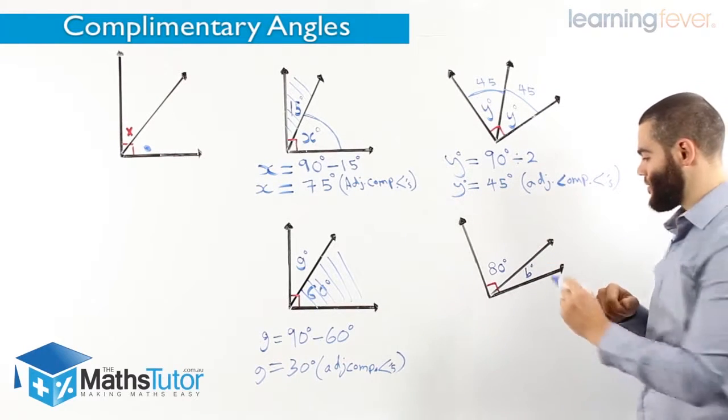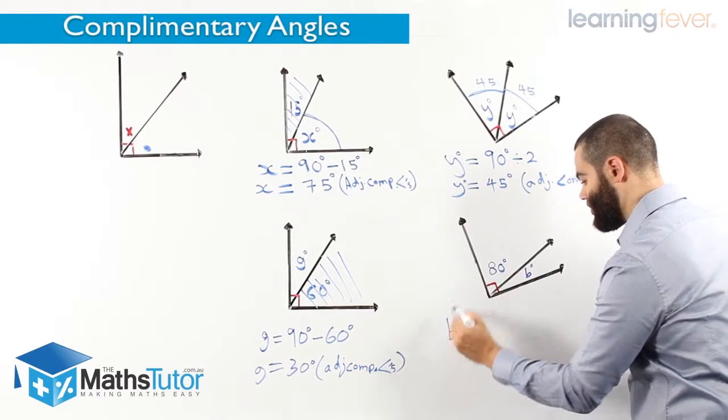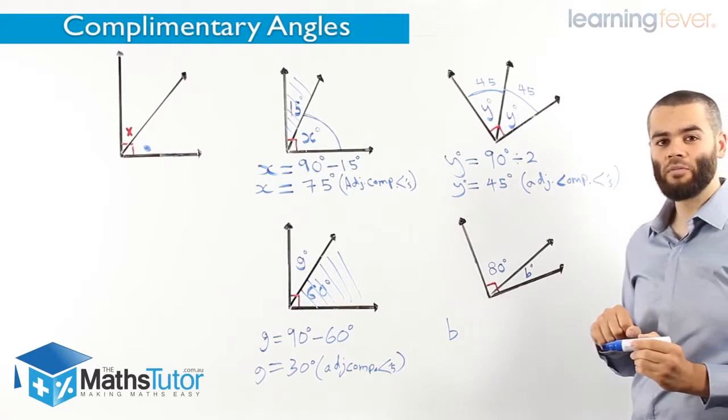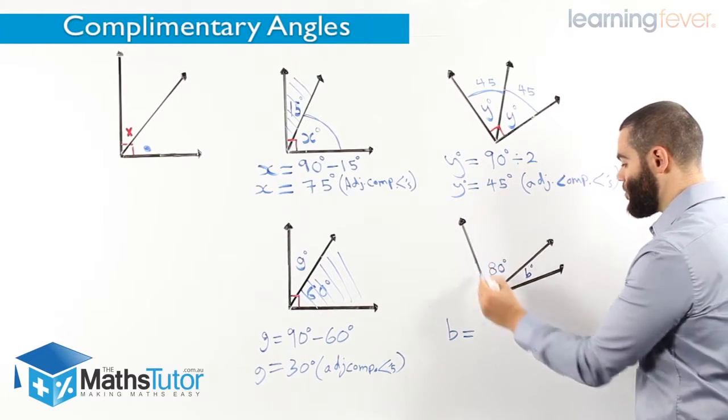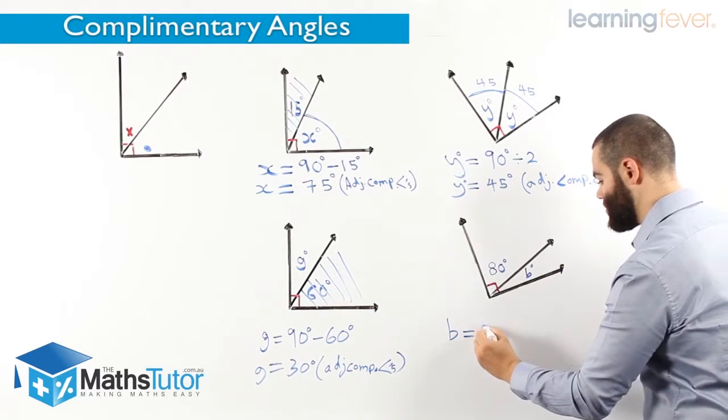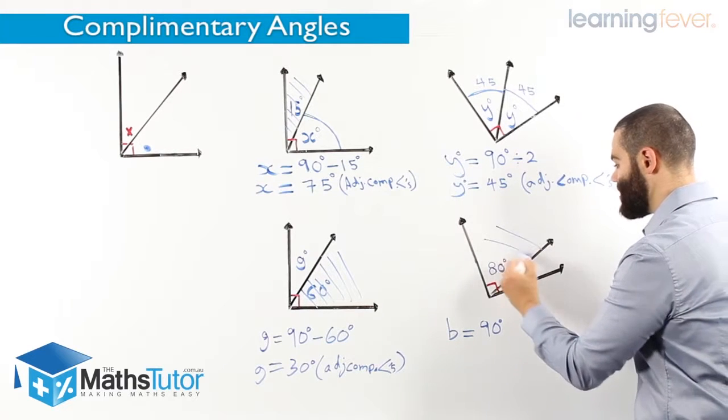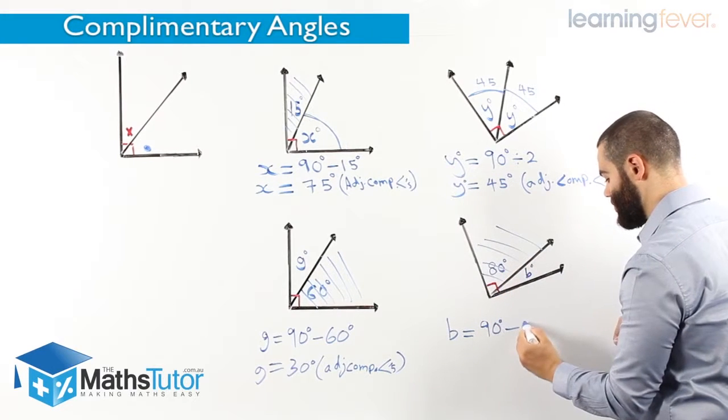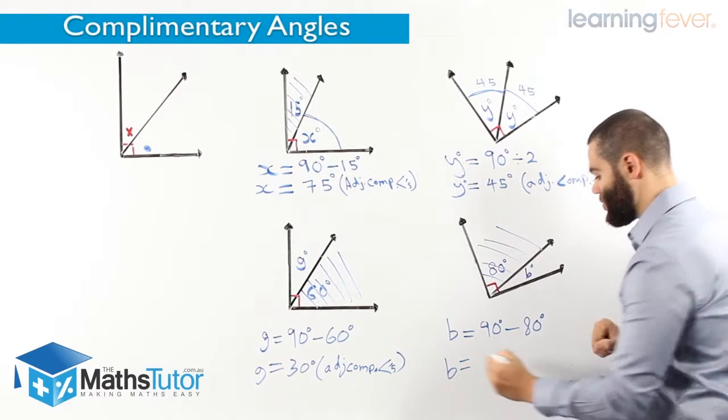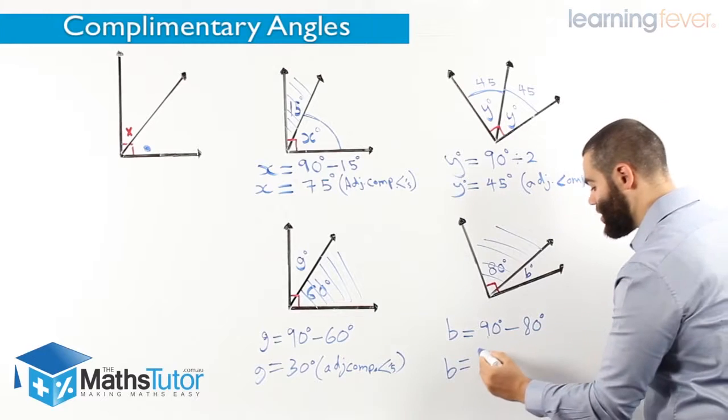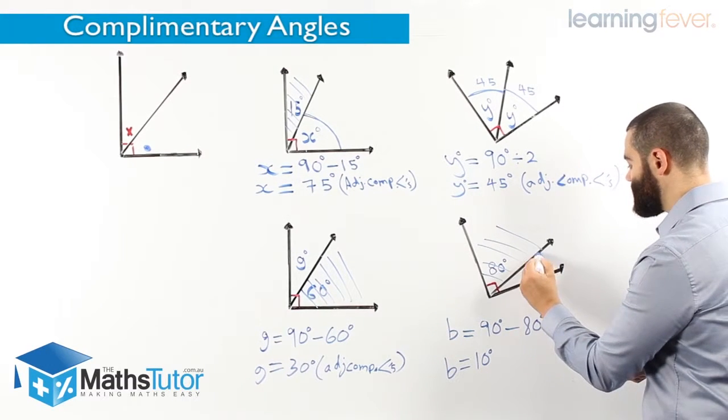Last one. Again, think if you can do this one yourself. What do you think b is going to be? B is the complementary angle, which is 90 degrees in total. Take away the 80. 90 take away 80, b must be 10 degrees. This section here is 10 degrees. 10 plus 80 make the 90 degrees.